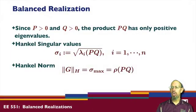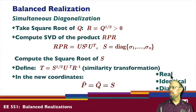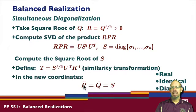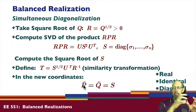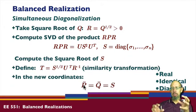When we go through and do all of this, we find that in the new coordinates the new P-bar equals the new Q-bar, and both equal S — the diagonal matrix of Hankel singular values. That's significant because they are real, diagonal, and identical. You can think of the balanced realization as setting up the controllability and observability gramians to be equal and diagonal, which balances the amount of energy between the input and the output.